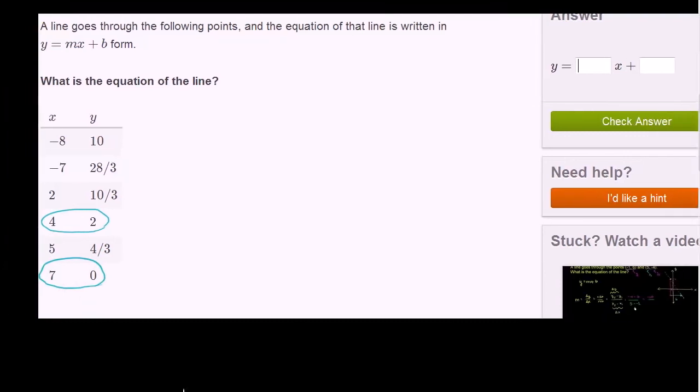So what is our change in x here? If we go from 4 to 7, our change in x is equal to 3. And what's our change in y here? So we went up from 4 to 7. We increased by 3. Our y decreased by 2. Change in y is equal to negative 2.